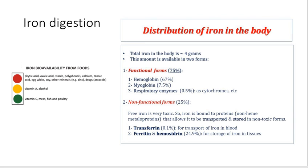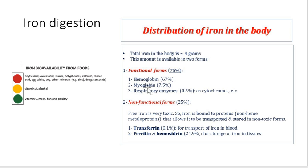This video is about iron digestion and absorption. If we talk about the forms of iron we eat and those available in the body, the total iron in the body is around 4 grams. This is available in functional form and non-functional form — functional form is around 75% and non-functional form is about 25%, which is a kind of stored form.